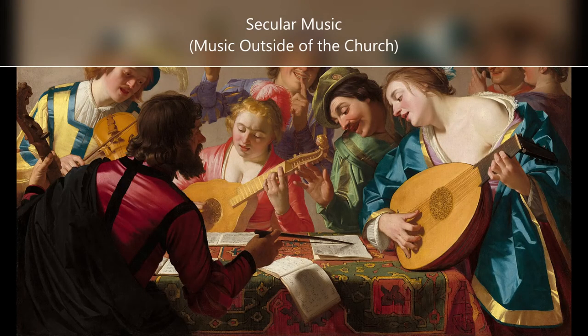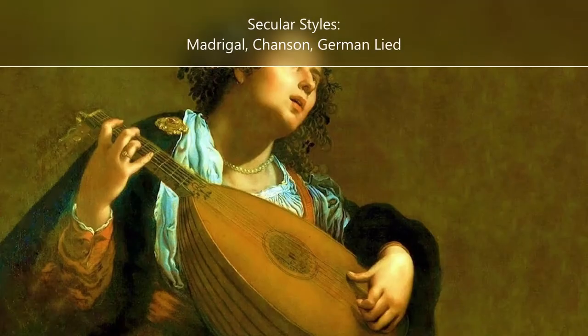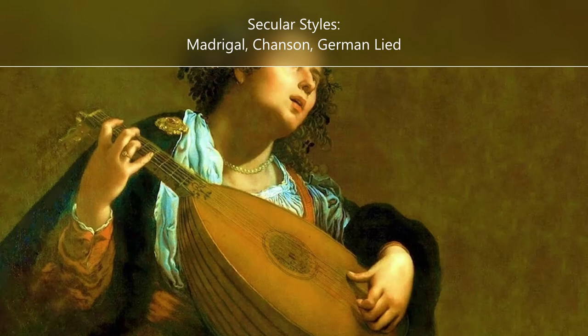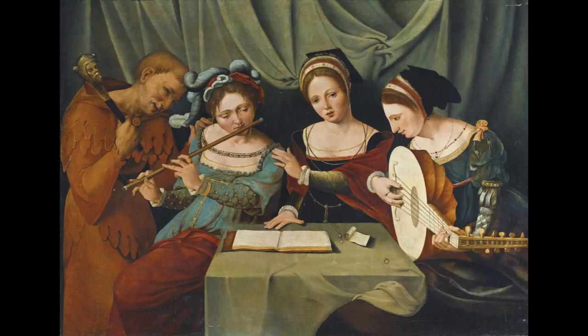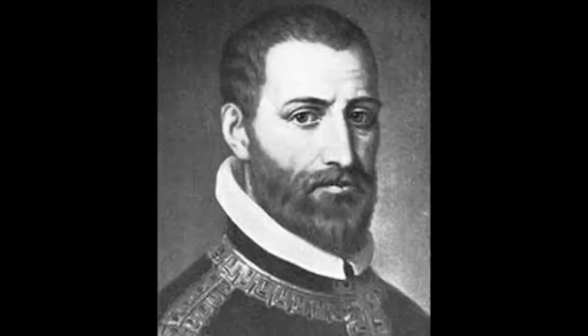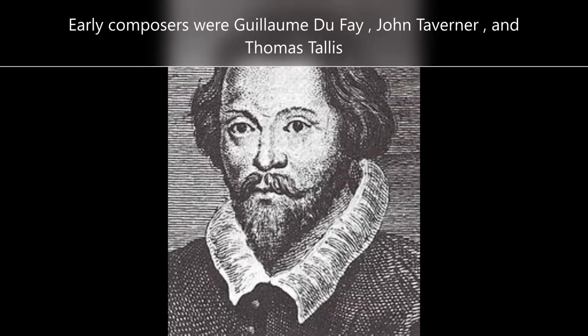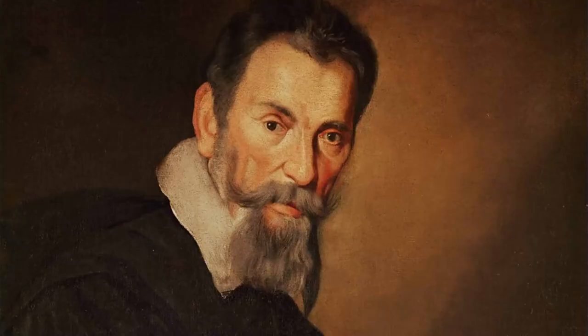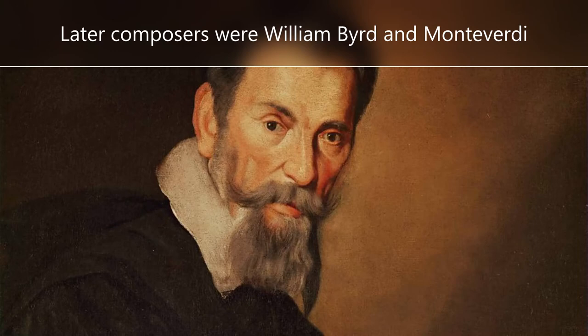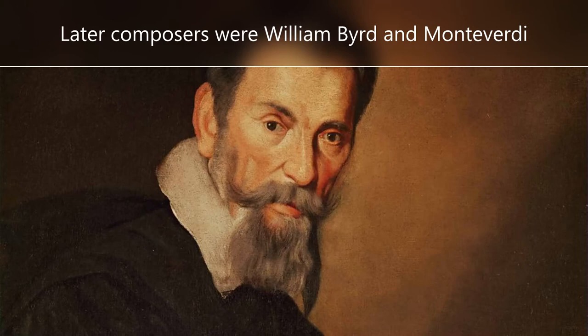Secular styles of this time included the Madrigal, Chanson, and German Lied. These styles pushed boundaries to create more emotion in music by including major and minor chords. Composers of this period were mainly from France, but later Italy became a really important musical center. Some well-known early composers are going to be up on the screen right now, but I don't know how to pronounce them, so I'm just gonna leave them there.